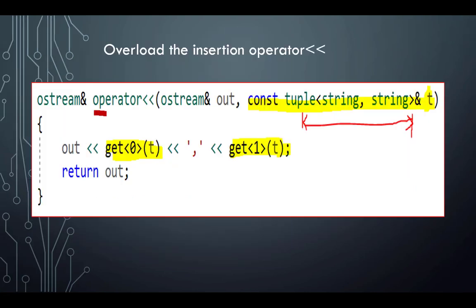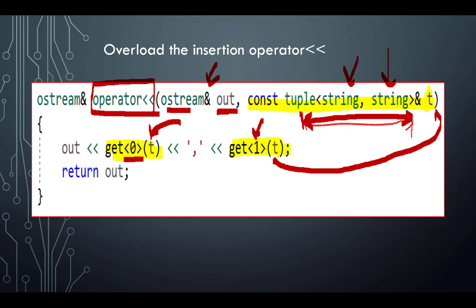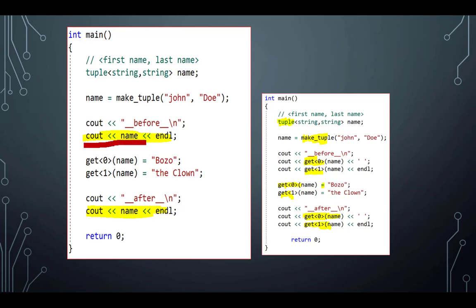I'm going to overload the insertion operator. Notice 'out' — that's really my shortcut for cout, an output stream reference. This is the tuple I want to give it. I'll say: anytime you see a tuple that has a string and a string in it, give it to this function. We take the tuple T, get item zero and print it, put a comma, then get item one from the tuple and print it. Send it to the outstream and return outstream back to the caller.